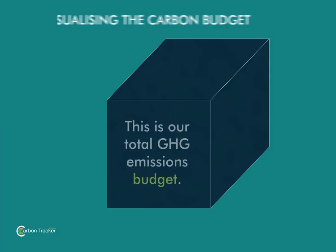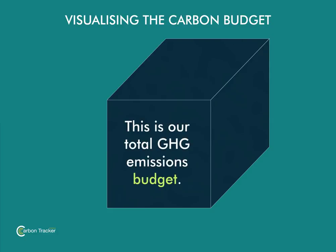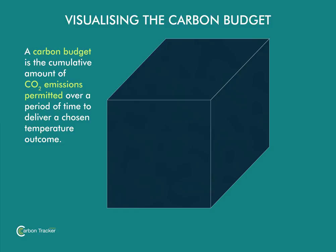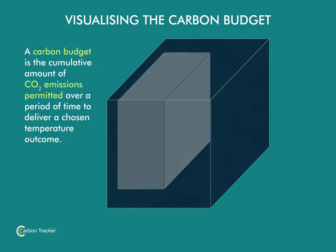Imagine that this cube represents the budget for all anthropogenic greenhouse gas emissions to 2100, to keep global warming to 2 degrees C above pre-industrial levels, as enshrined in the Paris Agreement. The budget for carbon dioxide only that we are interested in is hidden in there in the grey.